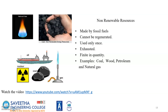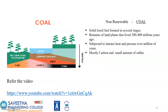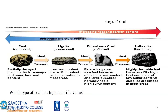Non-renewable resources such as fossil fuels cannot be regenerated — once used they are exhausted, as they are finite in quantity. Examples include coal, plutonium, and natural gas. Coal is a solid fuel formed from the remains of land plants that lived 300 to 400 million years ago, subjected to intense heat and pressure over millions of years. It is mostly carbon with small amounts of sulfur. The stages of coal formation with increasing heat and carbon content are illustrated.